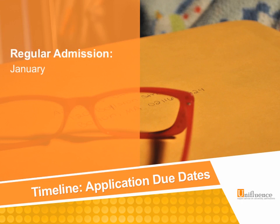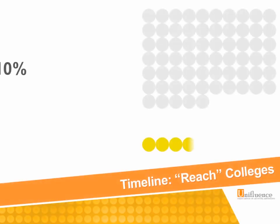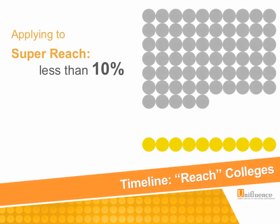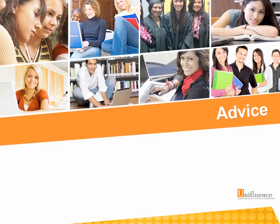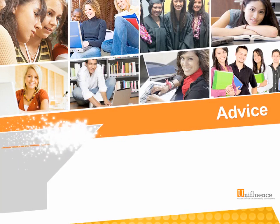Early admission is typically in November or December, and then regular admission is typically in the January–February timeframe. If you're applying to really tough to get into schools — super reaches that accept 10% or fewer students, like the Ivy League, MIT, Stanford, and Caltech — you're looking at earlier admission deadlines. If you're applying to schools that accept 25% or less, you're also probably looking at early admission deadlines, gearing your applications toward a November 1 deadline. My advice is to start as early as possible.